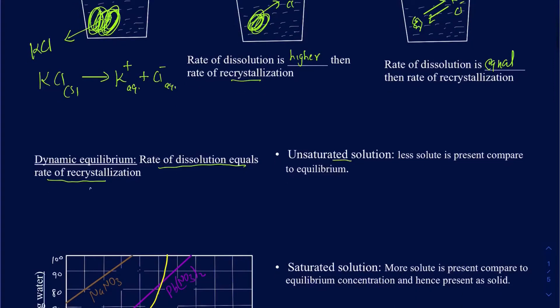The first type is an unsaturated solution. Unsaturated means you don't have enough solute present compared to the equilibrium position — you can still dissolve more. Think of eating pizza: if you've only eaten five slices, you can still eat more, so you're unsaturated. Once you've eaten enough and can't take any more slices, you're saturated. It's the same story with these solutions.